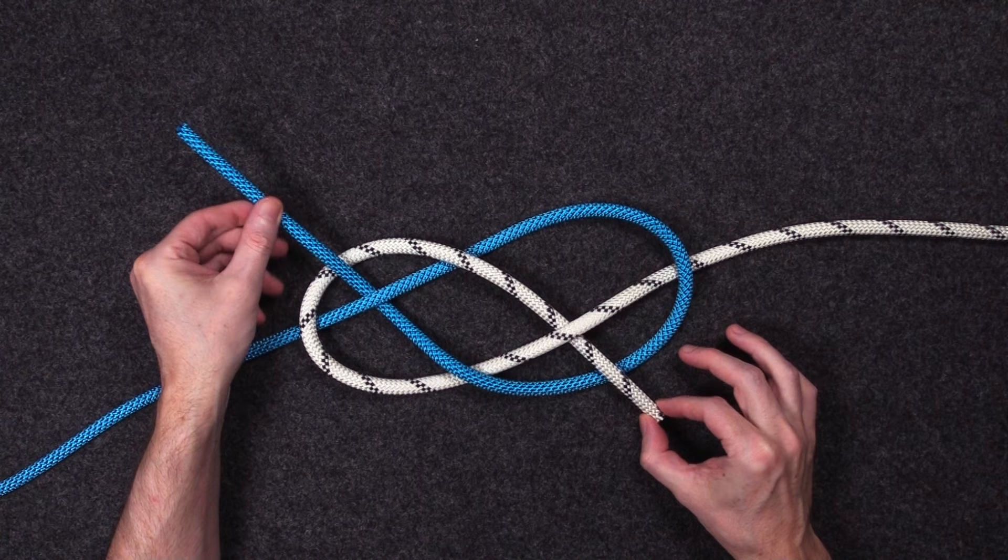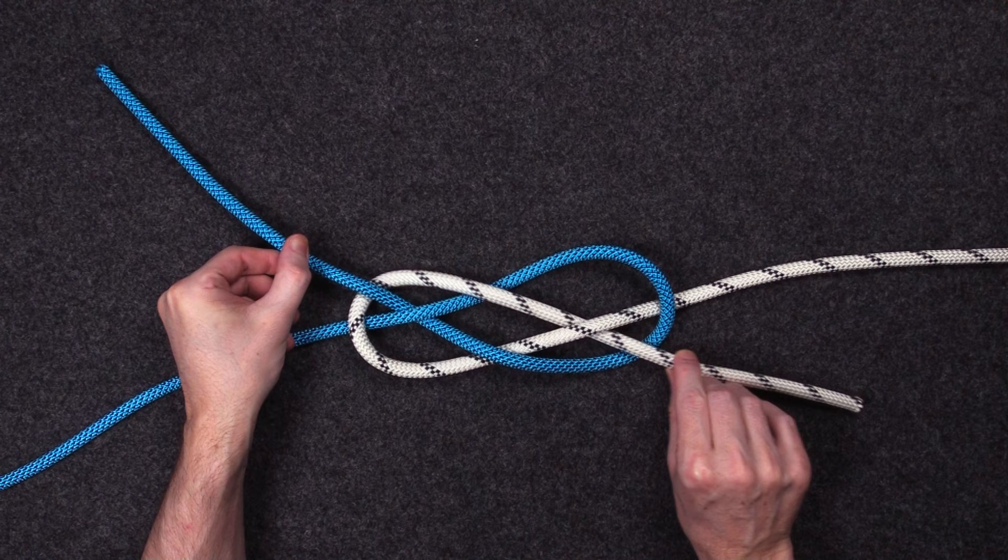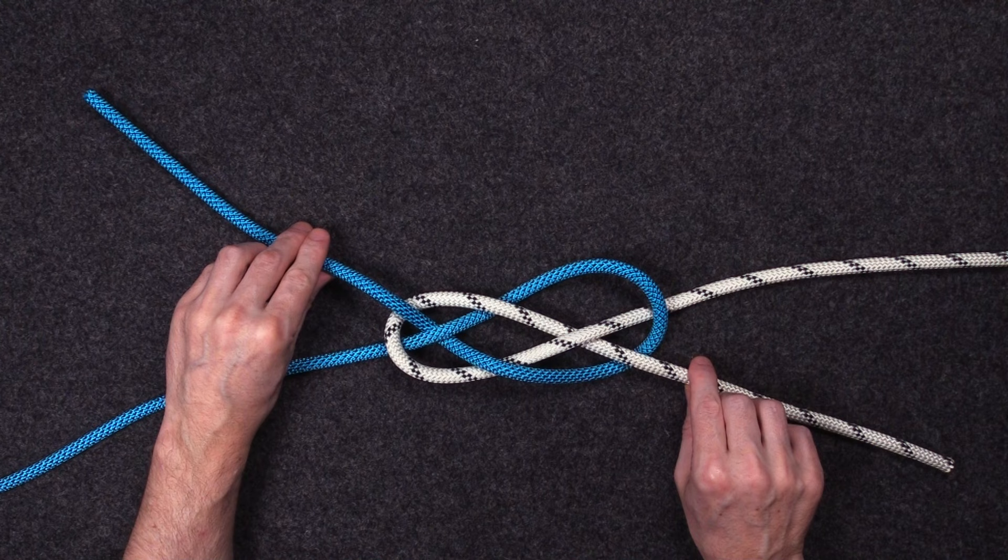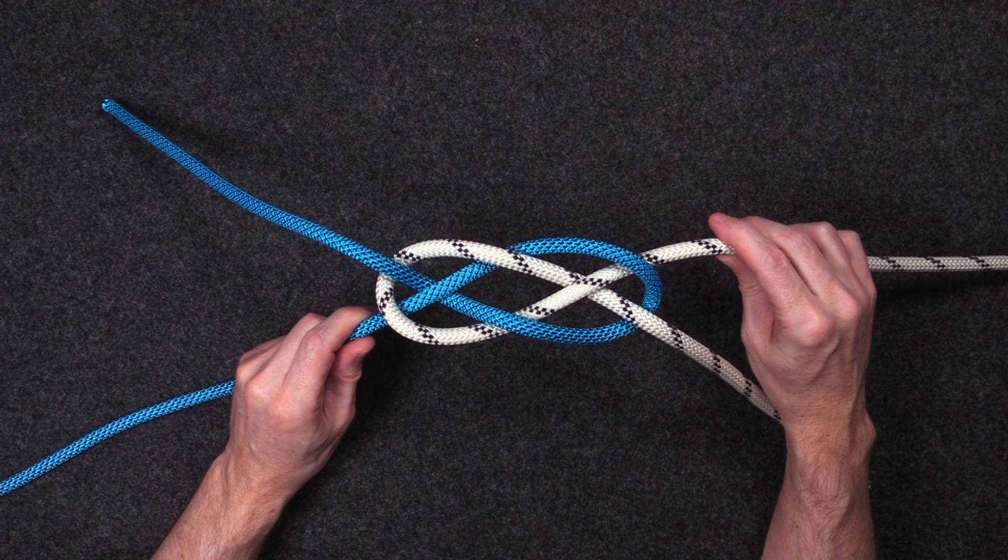So if we start to tighten this up, we'll see that famous decorative form of the Carrick Bend start to appear. I'm just pulling on the working ends and the standing parts, and we see that really decorative Carrick Bend.